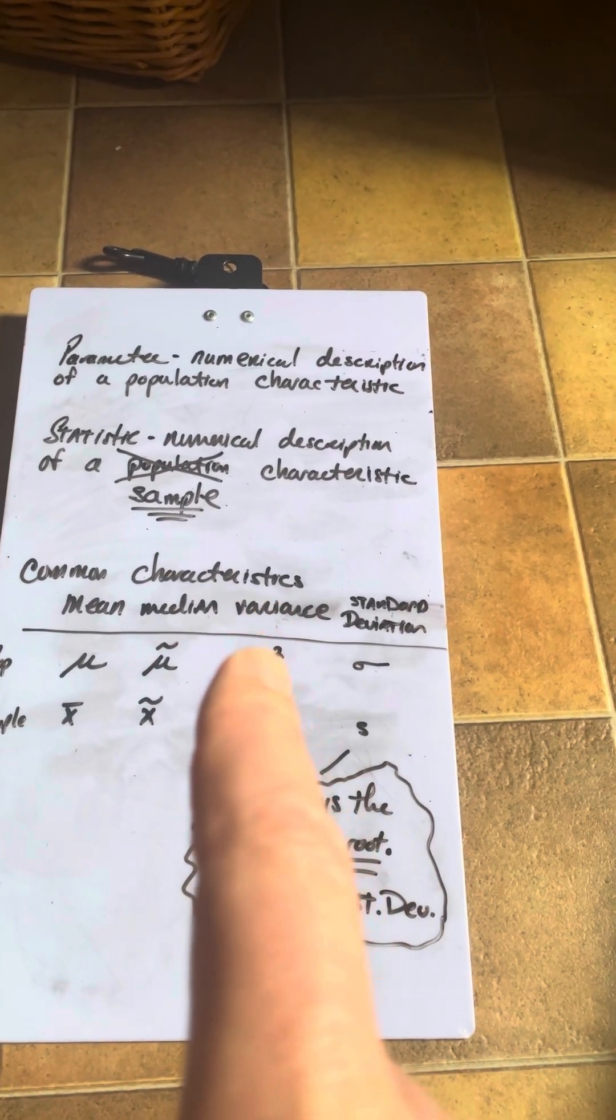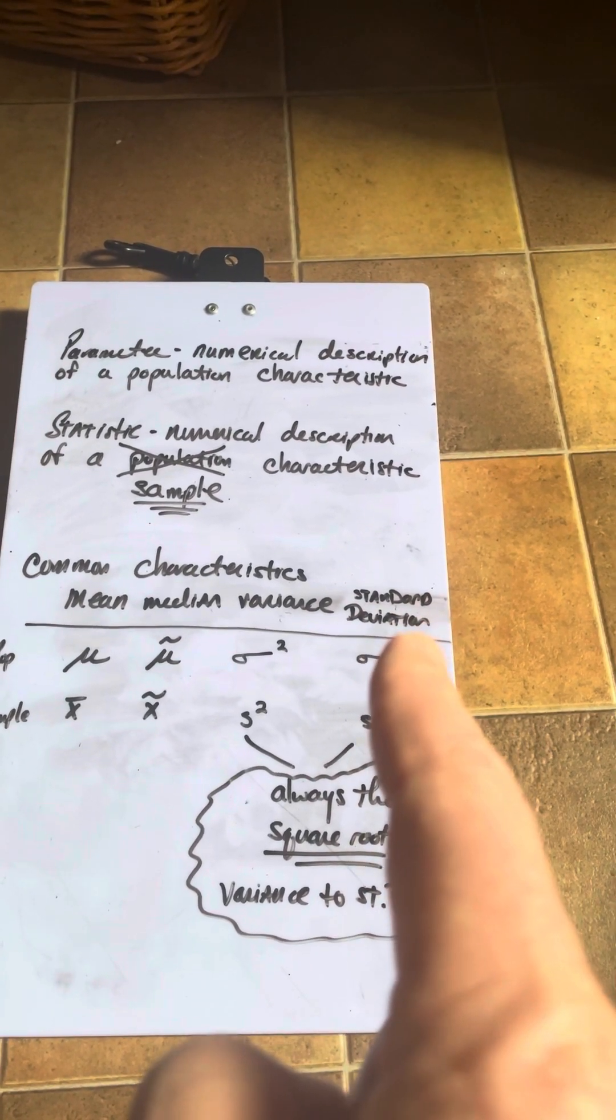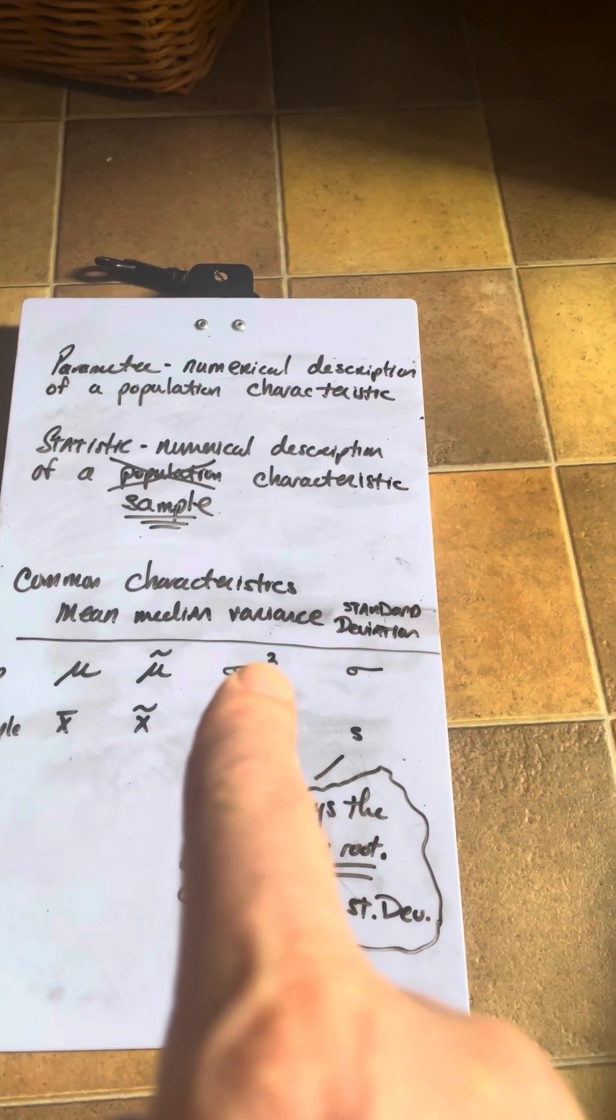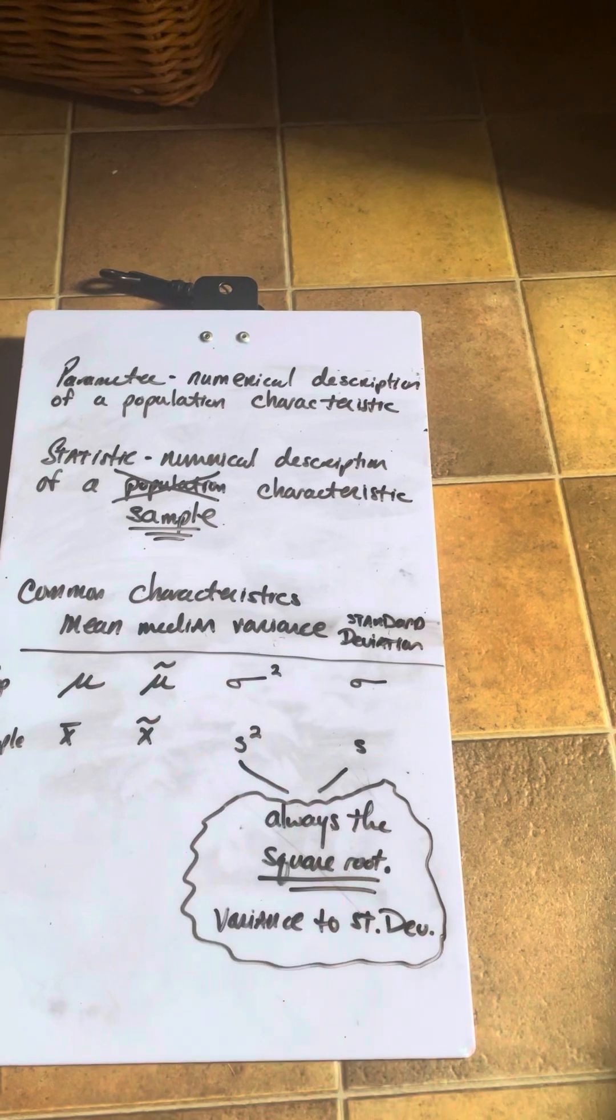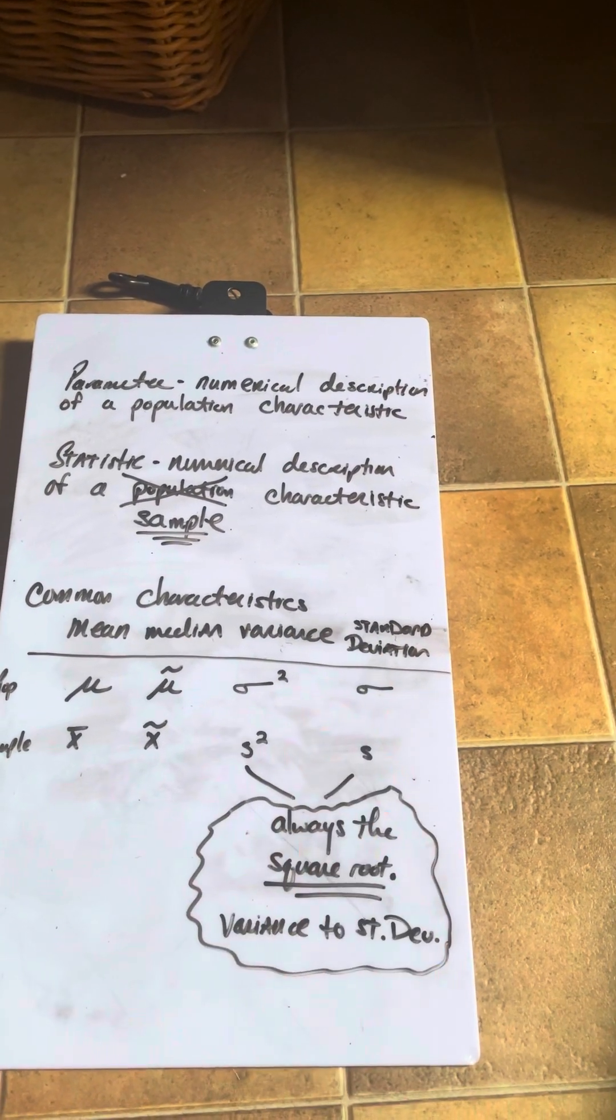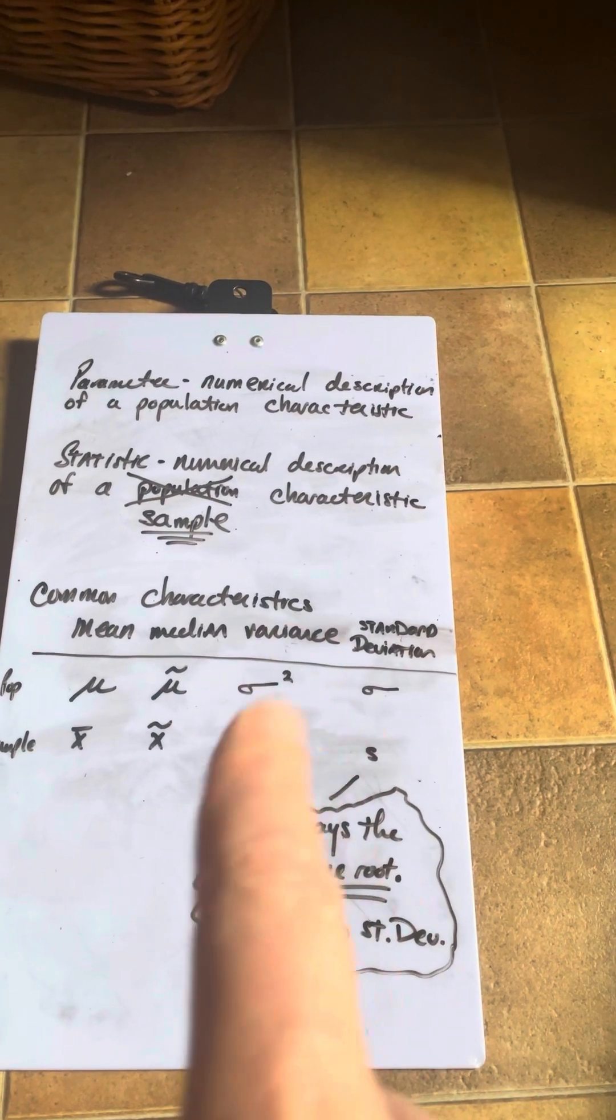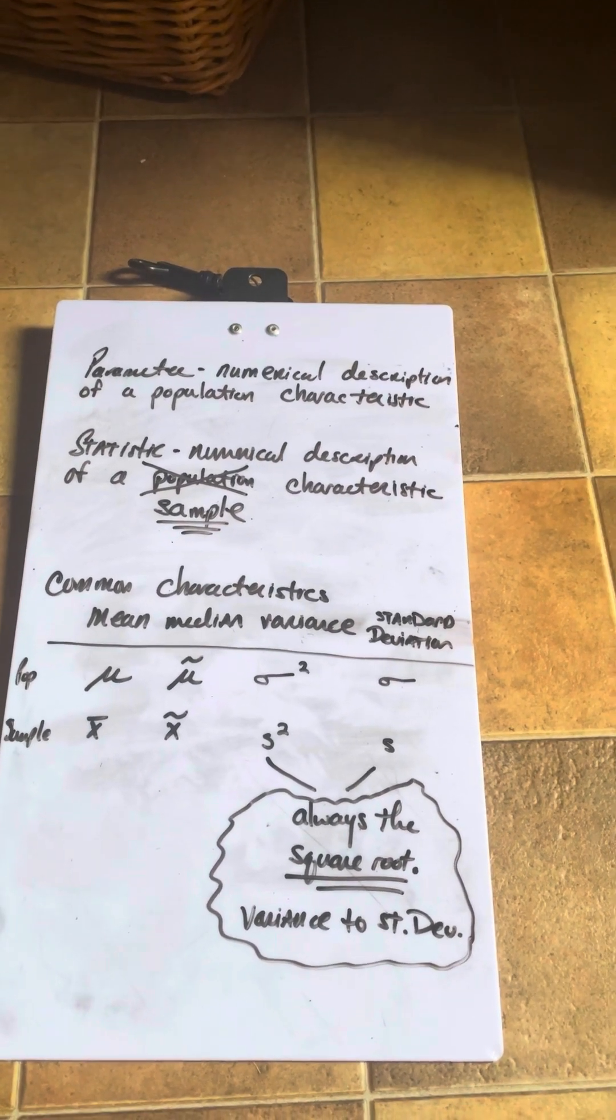When you are computing standard deviation, you are always computing the variance. And then the last step, when you take the square root, generates the standard deviation. So if somebody says to you, compute the variance, basically, take the standard deviation and square it. You take the standard deviation and you square it and you have the variance. Likewise, if you have the variance and they say give me the standard deviation, take the square root. Now there's processes to compute these and we'll learn those later. All right. Hopefully that helps. I'll talk to you later.